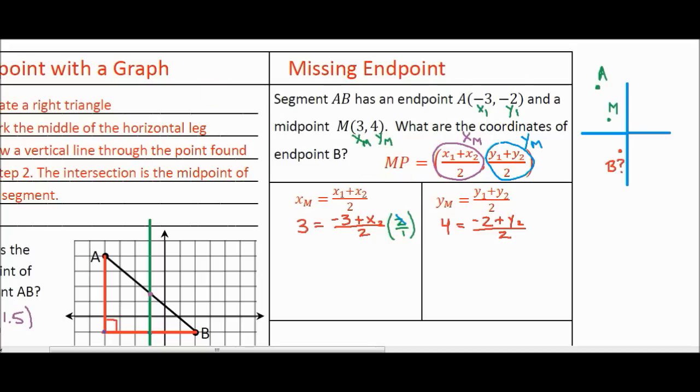That means this 2 cancels and this 2 cancels. And if we multiply this side by 2 over 1, we're going to have to multiply the other side of the equation by 2 over 1 as well, because you have to keep your equation balanced. And let's multiply this out. 2 times 3 is 6. The 1 on the bottom doesn't do anything, so we end up with 6 on this side. And since these 2's cancel and the 1 in the denominator does nothing, we end up with 6 equals negative 3 plus x sub 2.